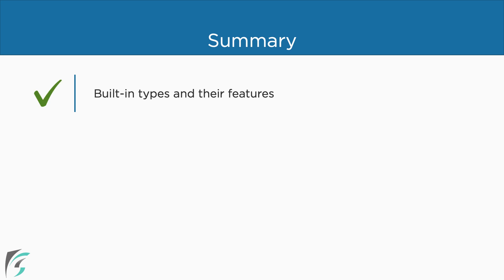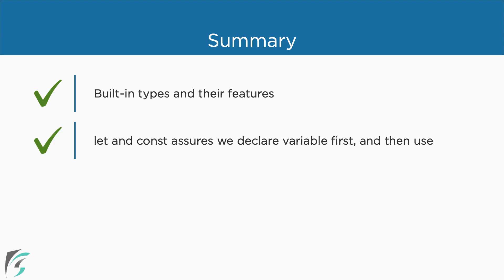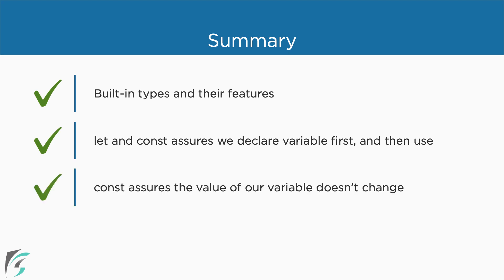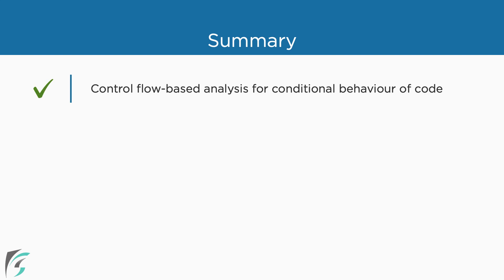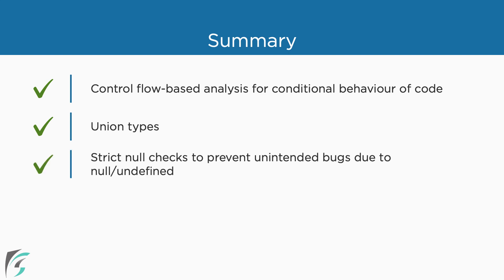In this module, we covered several built-in TypeScript types and their features. We saw how the let and const keywords ensure we define a variable before using it, and that const assures the value of a variable doesn't change. Type annotation increases the clarity about the type of variables. Control flow based analysis helps us have conditional behavior and work with specific types, while union types give us the flexibility to use several types for a particular variable. TypeScript also prevents unintended bugs especially in the case of null and undefined values.